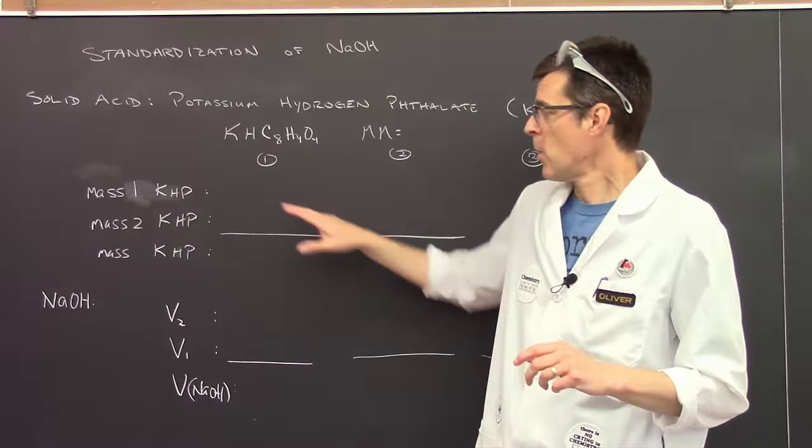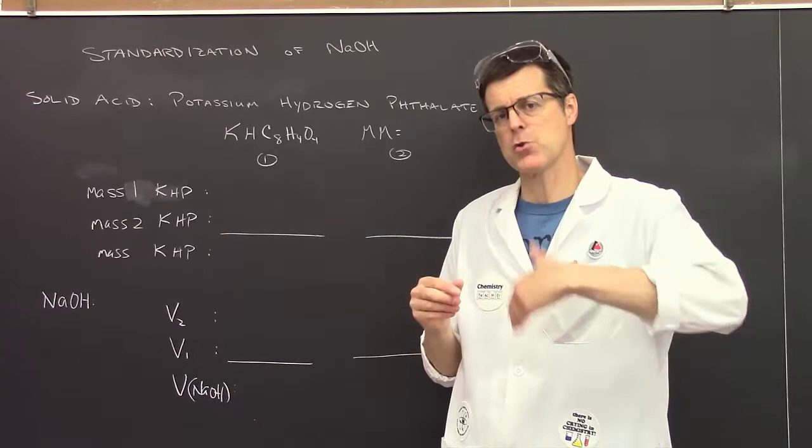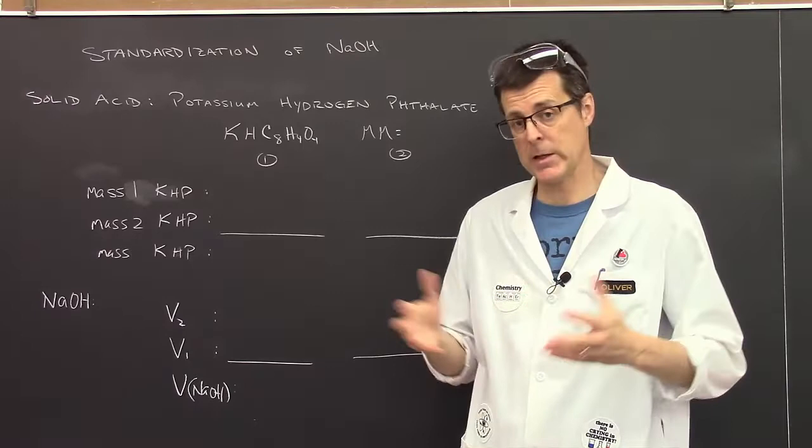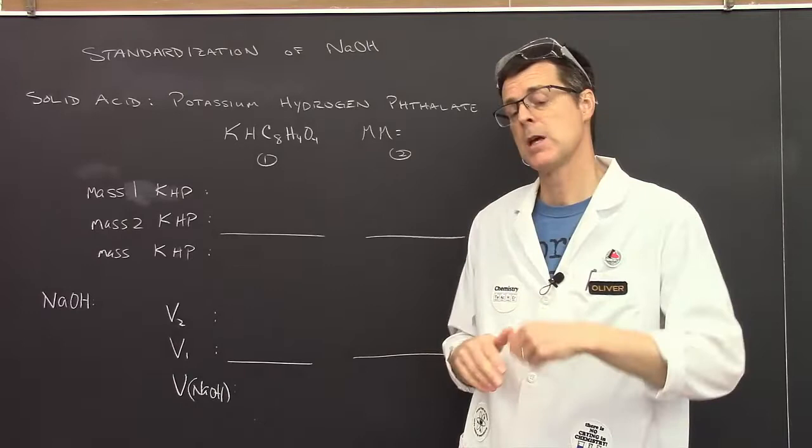We'll measure out some potassium hydrogen phthalate. I'm not going to measure it directly into the flask. I have a container with KHP already, and I'll find out what I've got to start, pour some into my flask, find out what I have afterwards, and then by subtraction find the mass.